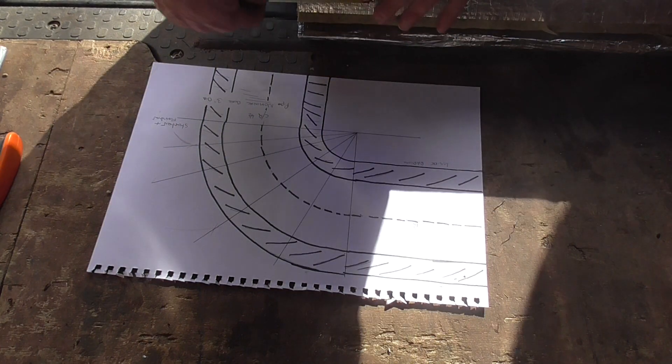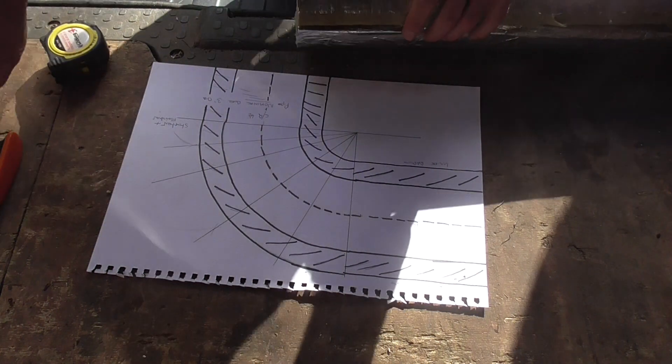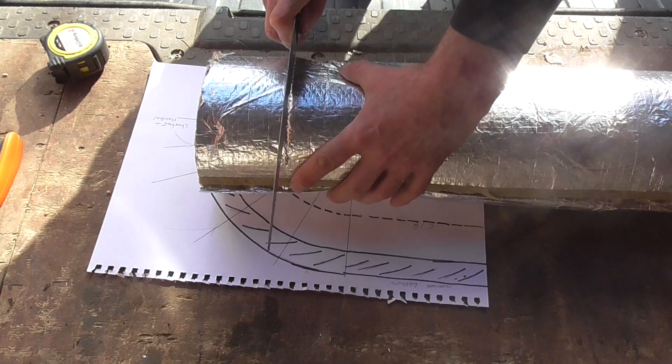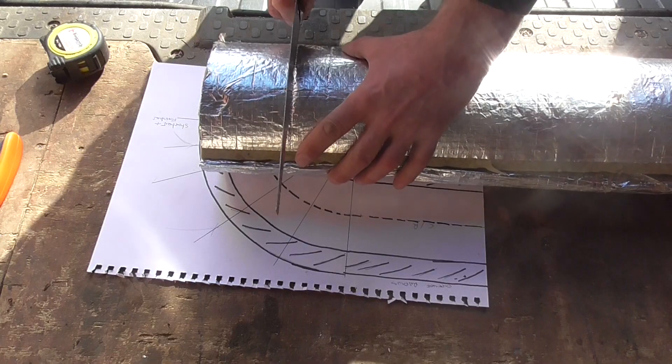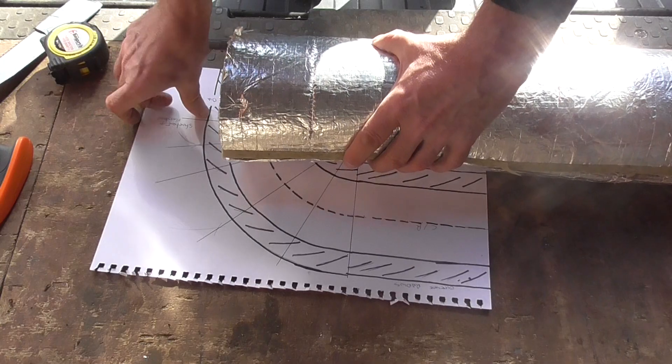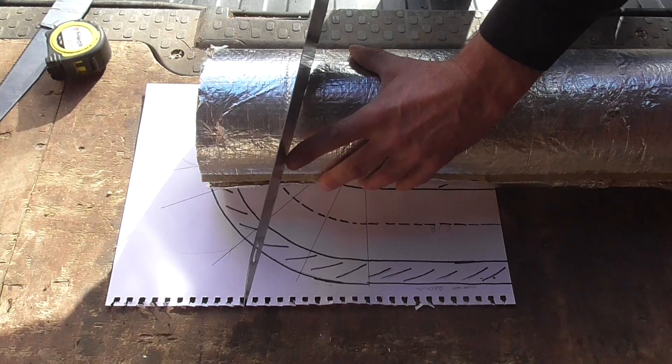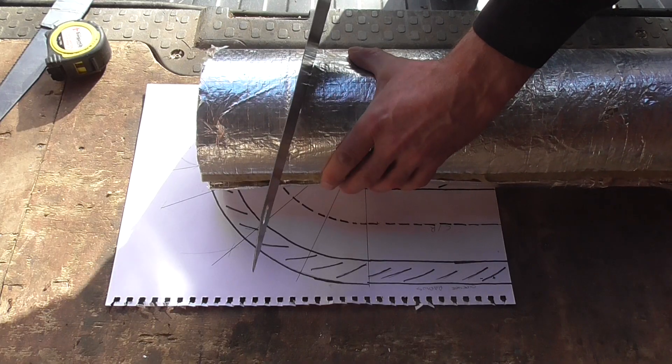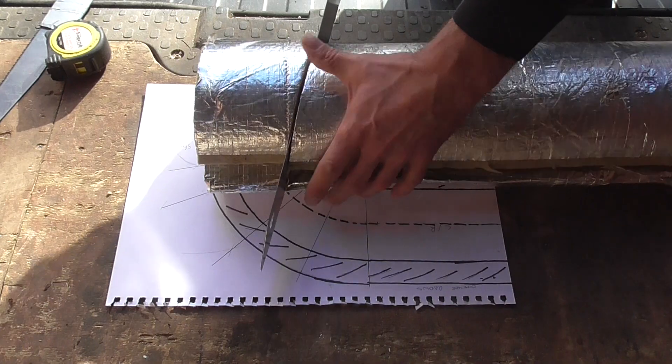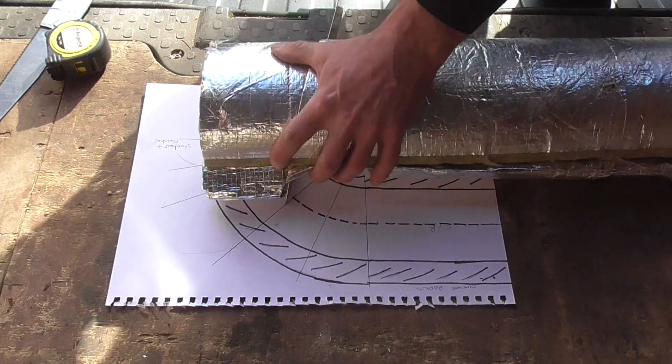So just measure in three and five eighths there. And just mark that with your pad saw. Like that. So you've got two lines. Now all you need to do is just physically cut between the two lines and that will give you your start. So you just cut between the two lines.